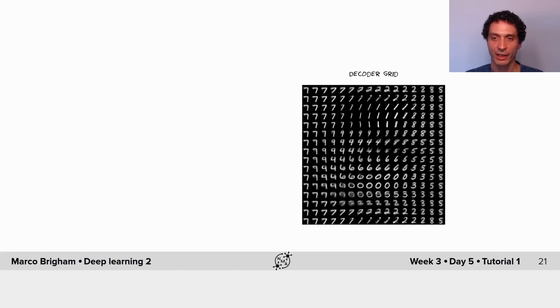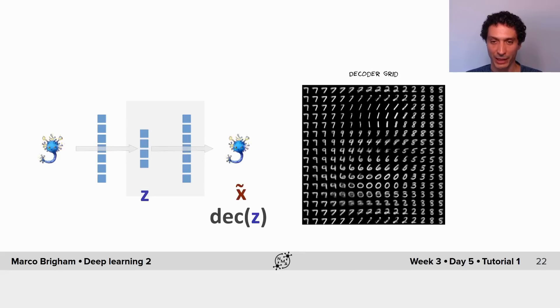The decoder grid is an equally spaced grid on bottleneck layer that then is reconstructed back. So we go to bottleneck layer and we take equally spaced intervals in x and y, and then each one of these points we reconstruct it by feeding it to the decoder.